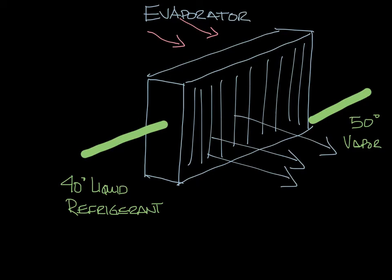So let's move this over to the side and draw the next component. When the refrigerant vapor leaves the evaporator, it goes to the compressor. The compressor compresses the refrigerant vapor. This raises the pressure and temperature of the refrigerant vapor. So this is our compressor.